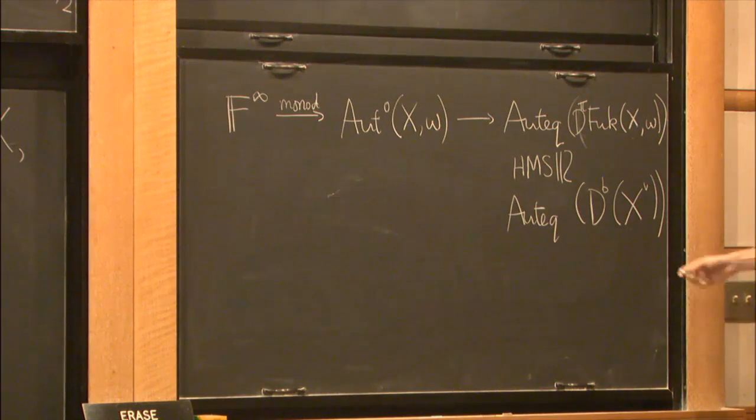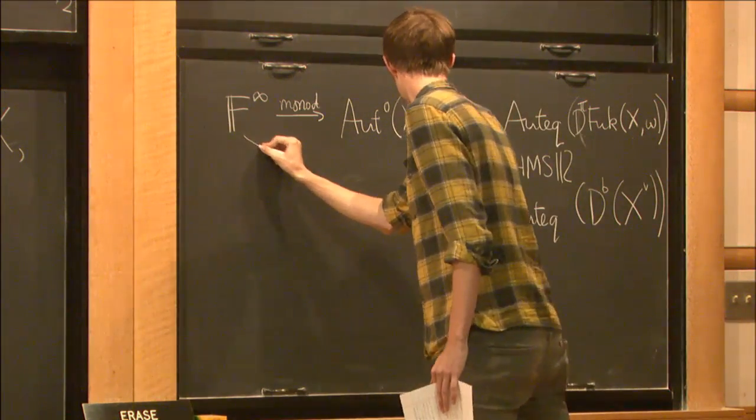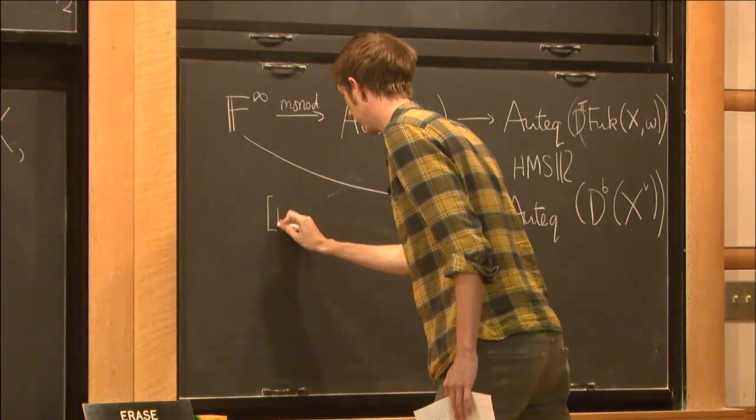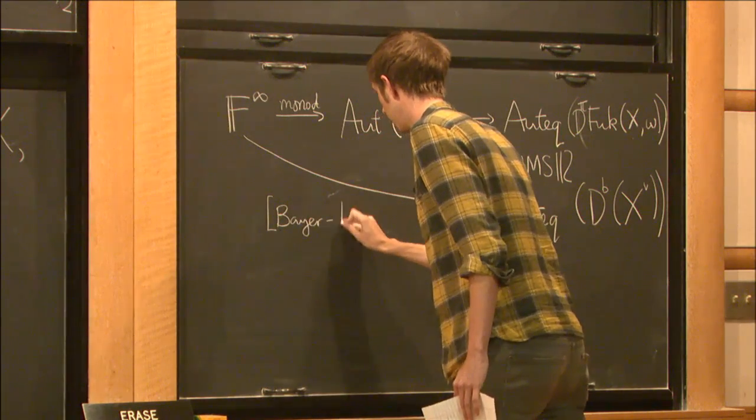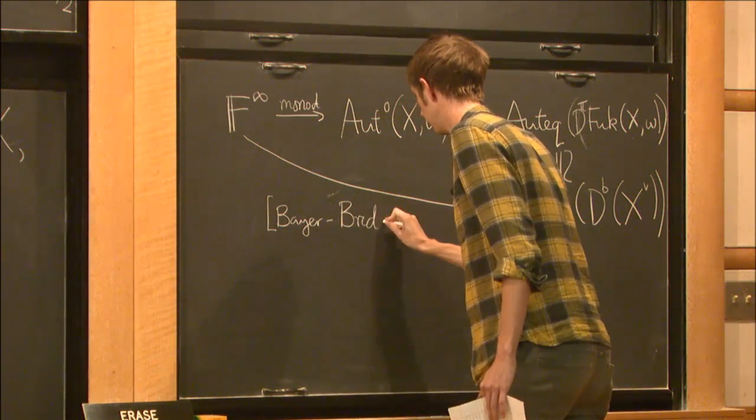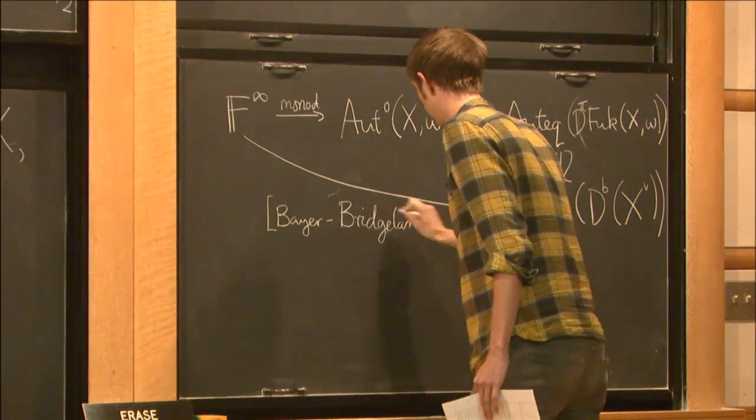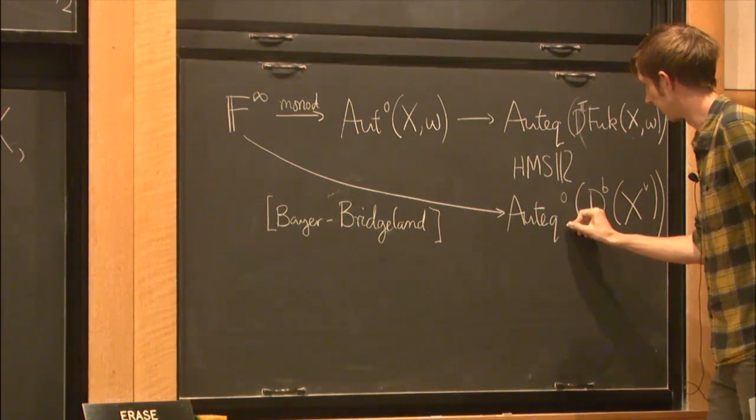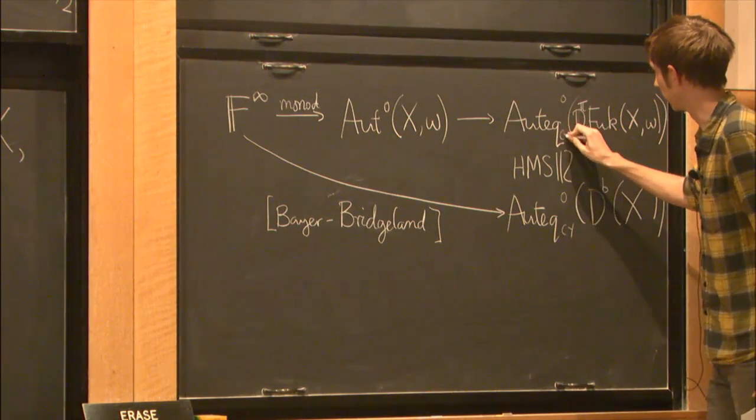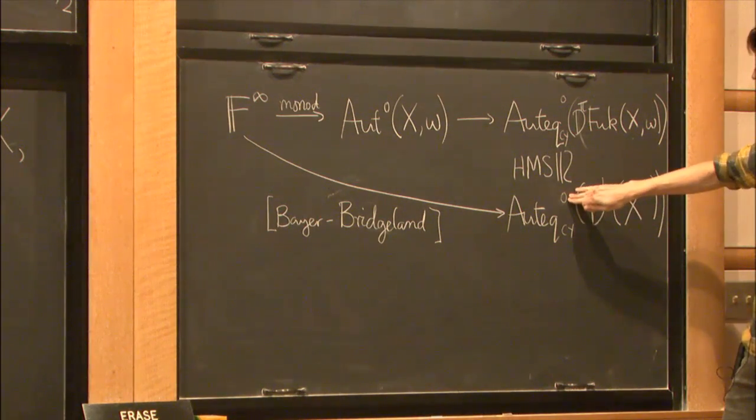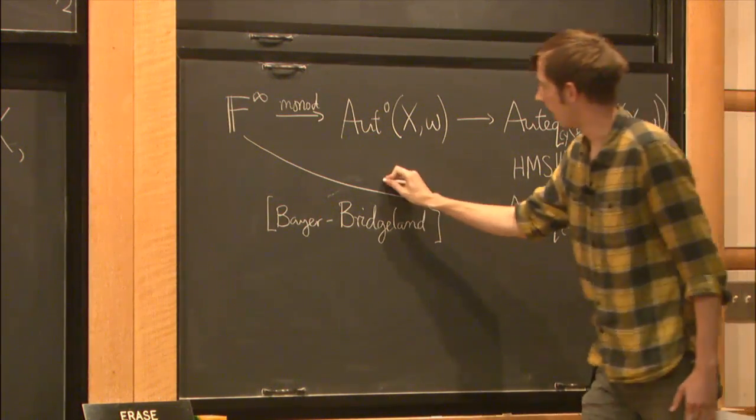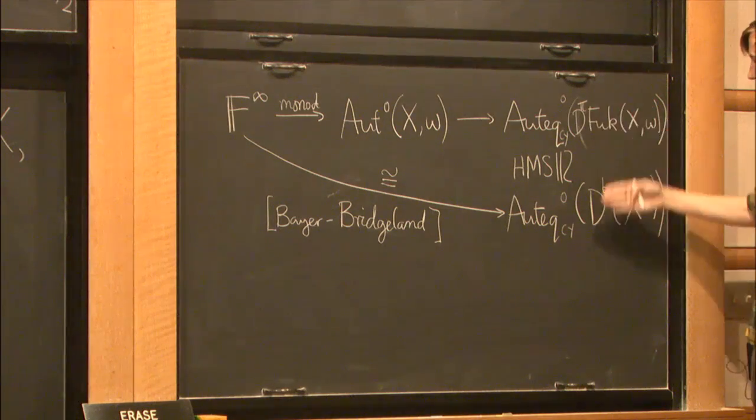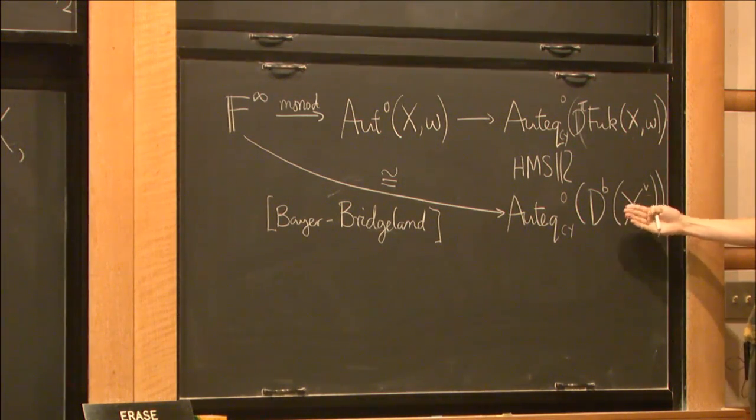We're able to equate this guy with the bounded derived category of coherent sheaves on some mirror variety. And now the actual heavy lifting in the theorem has been done by a work of Bridgeland and later Byron Bridgeland where they actually computed what this auto equivalence group looks like and you can take some subgroup of it that you denote like this Calabi-Yau auto equivalences that act trivially on homology and then this is actually an isomorphism.